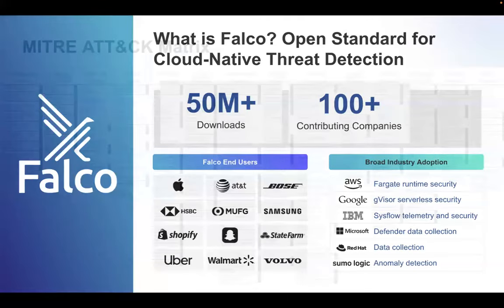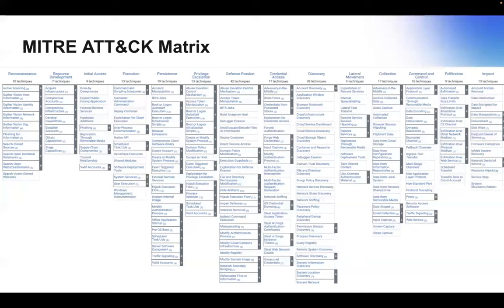So what is MITRE ATT&CK? The MITRE ATT&CK framework, or the matrix, is a way of seeing the tactics and techniques across the kill chain within your environment. Things like reconnaissance through initial access, all the way to impact, data exfiltration. It's a way of categorizing what stage an attack is happening in your environment — whether it's early access or something like data destruction, happening later once they've gained persistence in your environment.